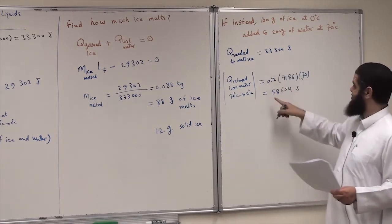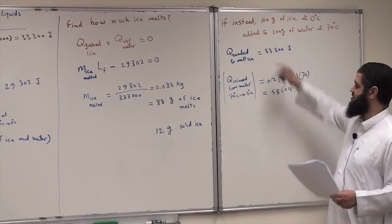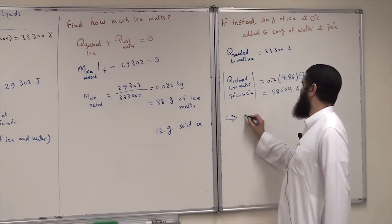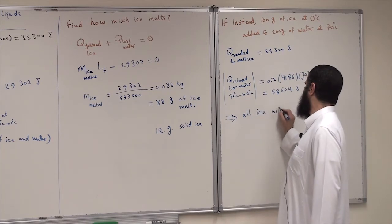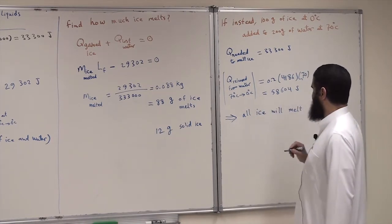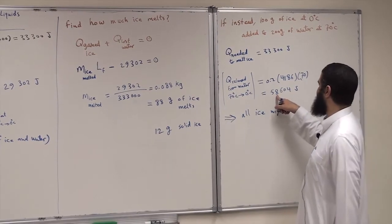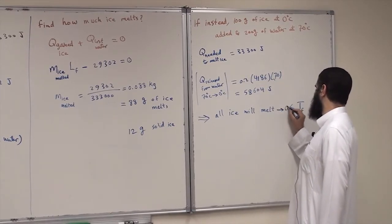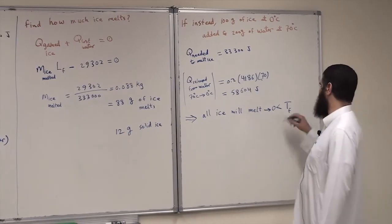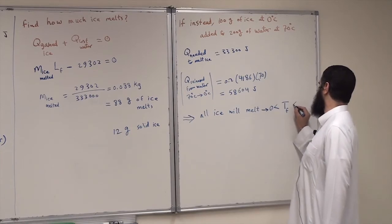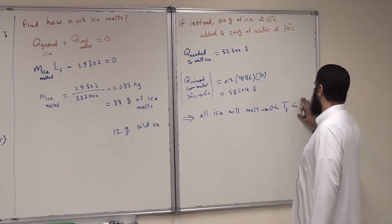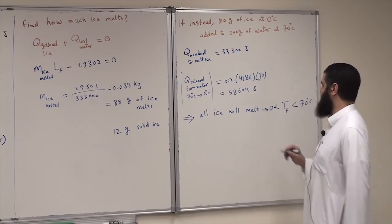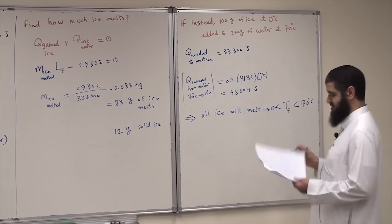We have more than enough heat — 58,000 joules is much greater than 33,000 joules. So we are sure that all the ice will melt. Not only that, we have extra heat available, so the final temperature will be greater than 0°C. It will be enough to heat the melted ice above 0°C, but of course less than the initial water temperature of 70°C.